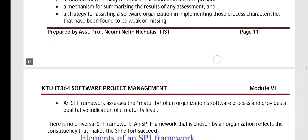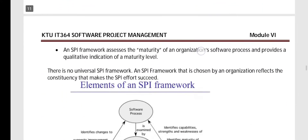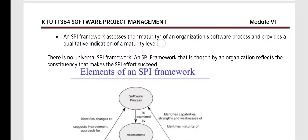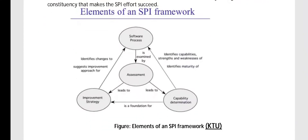The SPI framework assesses the maturity of an organization's software processes. It is a qualitative indicator of the maturity level of a company or organization. There is no universal SPI framework. Next are the elements of the SPI framework, which is a K2 question.